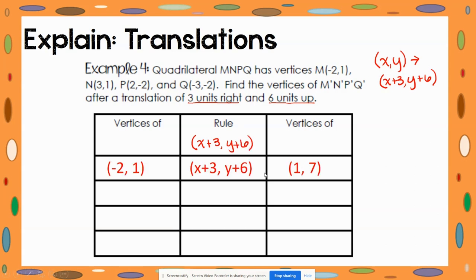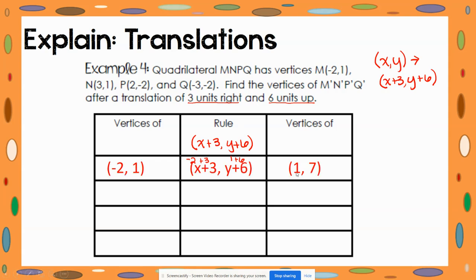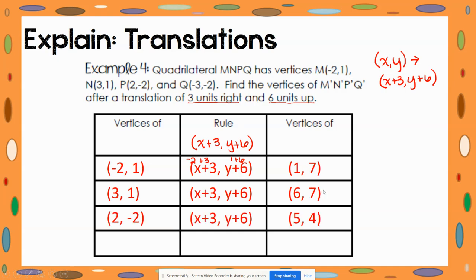For the first vertex (−2, 1): negative two plus three is positive one, and one plus six is seven — so the new vertex is at (1, 7). Now finish the rest of the table. For (3, 1), the new vertex is at (6, 7). For (2, −2), the new vertex is at (5, 4). And for Q at (−3, −2), the new vertex is at (0, 4).